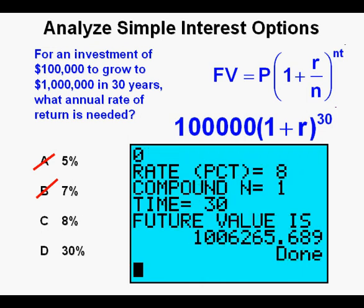Now we try 8% for answer C. Press enter. This time we do get to $1,000,000 with over $6,000 to spare. So we circle our correct answer C. I hope that while you can see how helpful the program is you understand that we could have done this one fairly easily without the program as well.